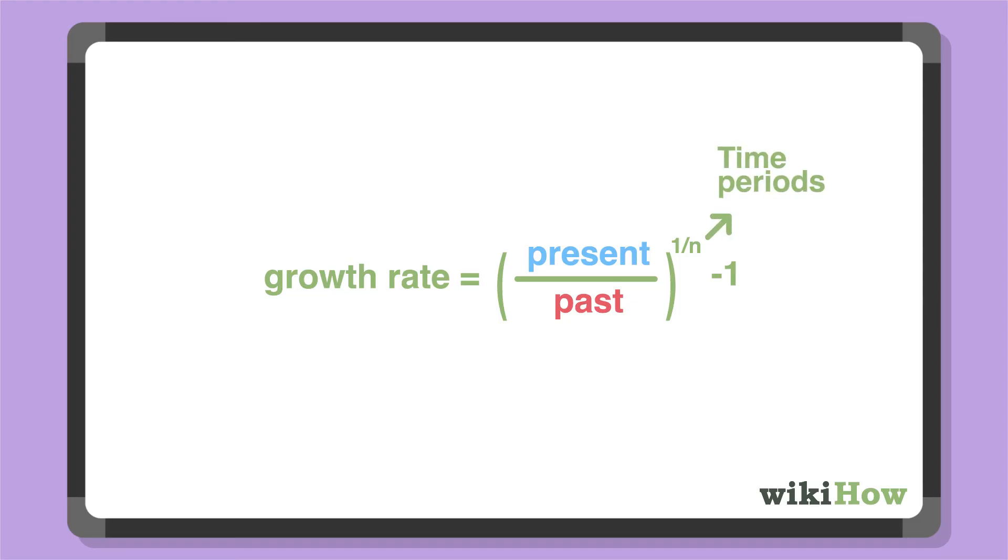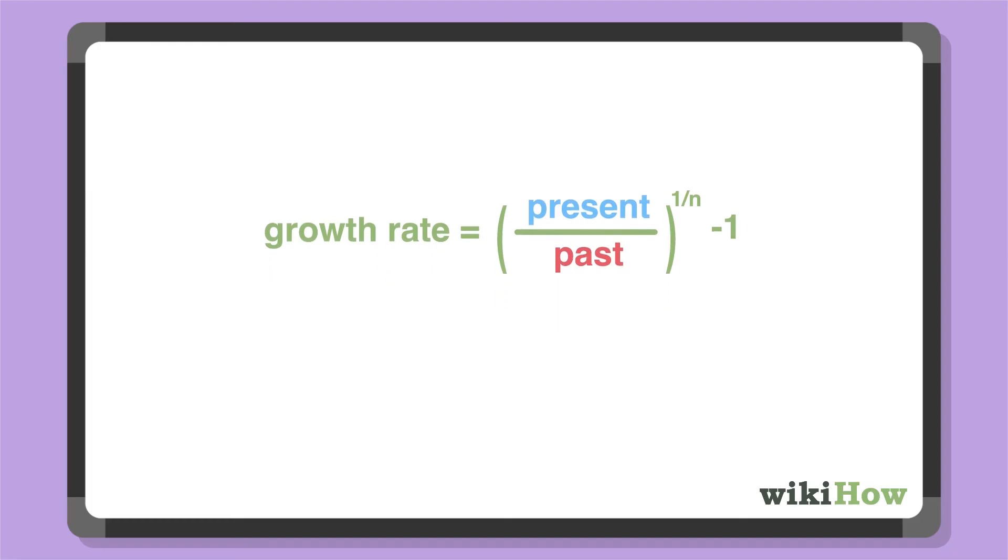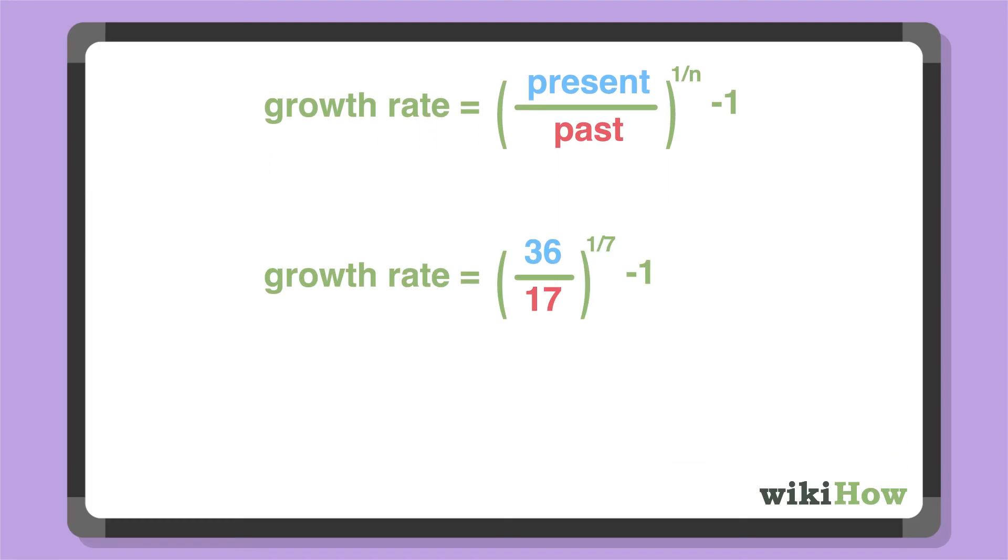For instance, if your starting value was 17 and your ending value was 36, and this growth took place after a period of seven years,